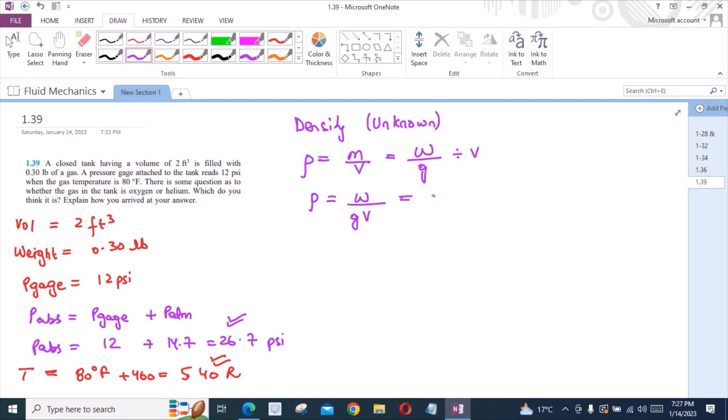So from here, weight is equal to 0.30 lb. And in the units of feet and seconds, the acceleration due to gravity is equal to 32.2 ft/s². And the volume is 2 ft³. So from here, density of unknown gas is equal to 4.66×10⁻³ slugs/ft³. This is the density of unknown gas.